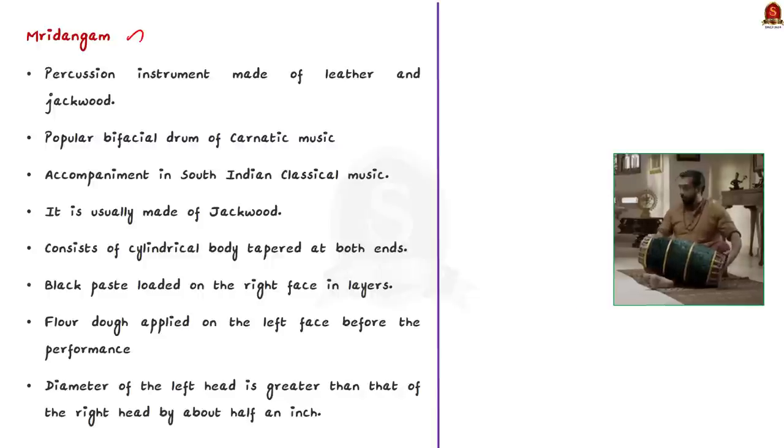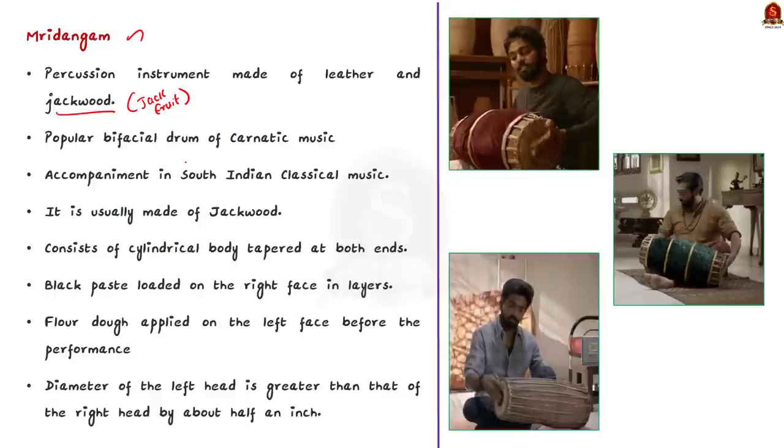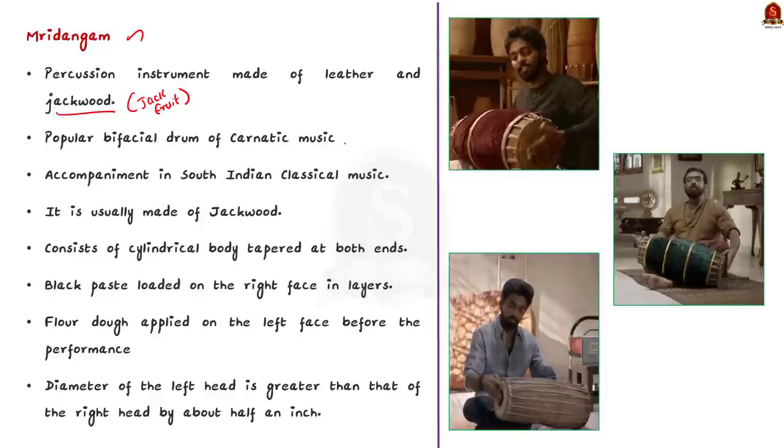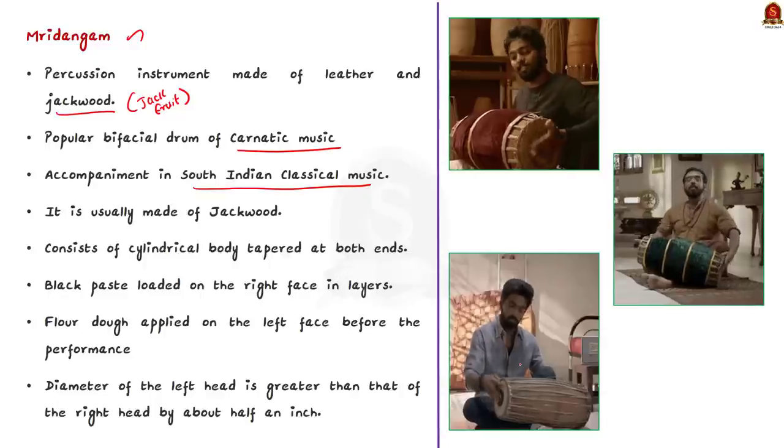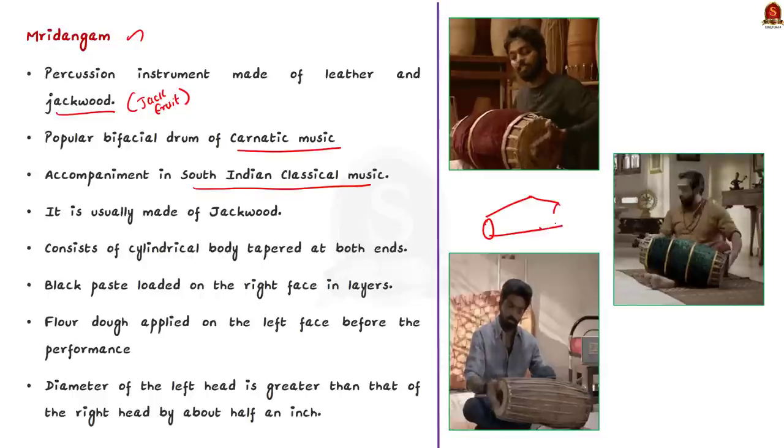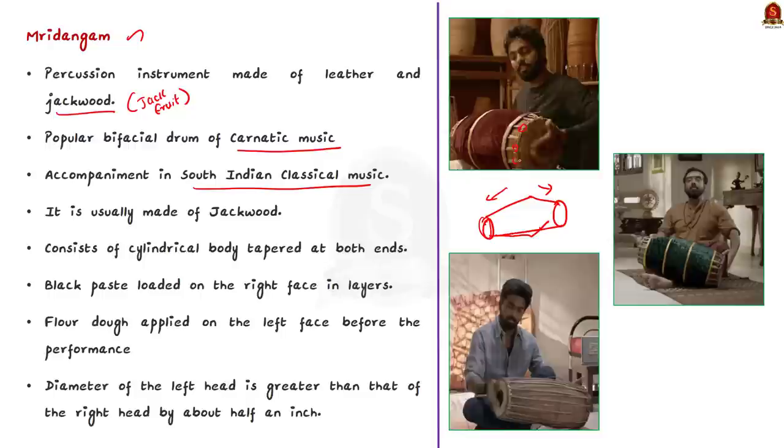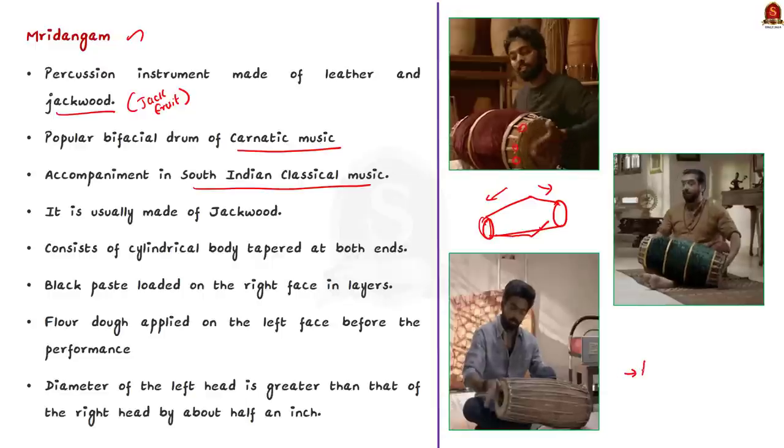First, let us take Mridangam. Mridangam is a percussion instrument made of leather and jackwood. Jackwood is nothing but the wood made from jackfruit tree. This traditional instrument is found in various parts of South India. It is a popular bifacial drum of Carnatic music and it is used in South Indian classical music. Here, bifacial means two sides of the drum can be used to make sound. Mridangam consists of a cylindrical body tapered at both the ends.